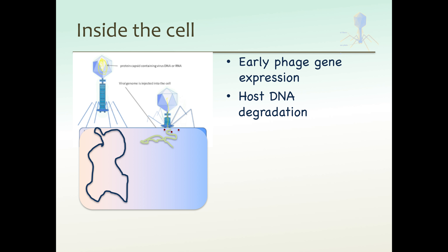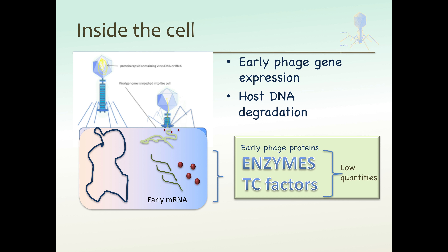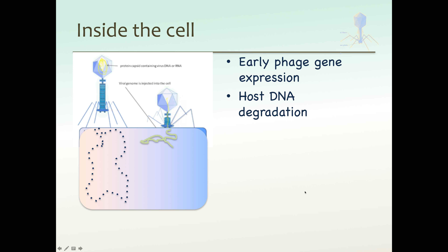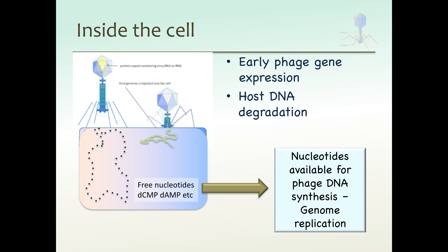So what happens once the DNA gets inside the cell? There's early phage gene expression and host DNA degradation. The phage expresses proteins involved first in degrading the host DNA. Also included during early phage gene expression are transcription factors that will turn on the middle genes. These enzymes — nucleases and transcription factors — can be made in pretty low quantities since they can be used over and over again. The degraded host DNA nucleotides are then metabolized and reused for phage genome synthesis and genome replication.